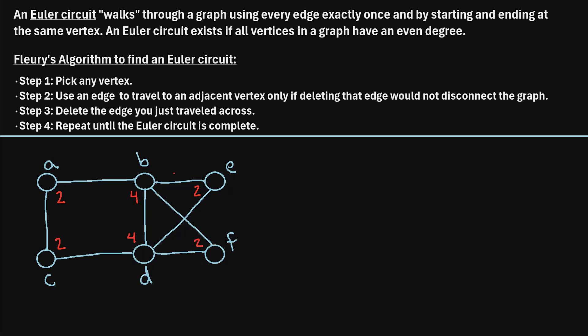So we can see that all of the vertices in this graph have an even degree. This means an Euler circuit must exist in this graph. In other words, if we start at some vertex, it's possible to walk through this graph using every edge only one time and end at the exact same vertex that we started at. So now we can use Fleury's algorithm to actually find this Euler circuit. Step one says pick any vertex, so let's pick vertex A to start with.